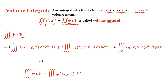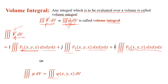So for the vector form, F dot dV, the vector F gives us the triple integral with components f1, f2, f3 as functions of x, y, z. We write: i times the triple integral of f1 dx dy dz, plus j times the triple integral of f2 dx dy dz, plus k times the triple integral of f3 dx dy dz. For a scalar function, we just write the triple integral of phi dot dV to evaluate the volume integral.